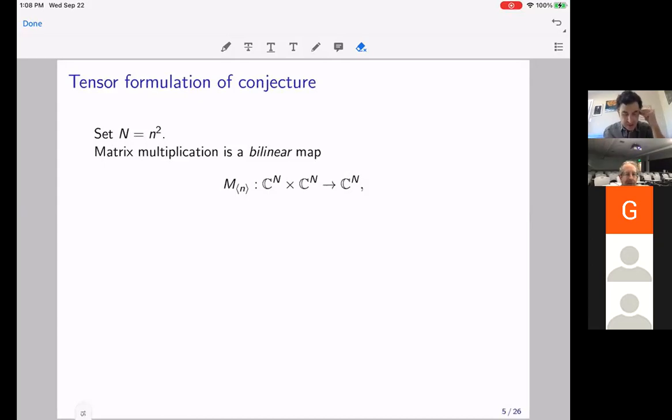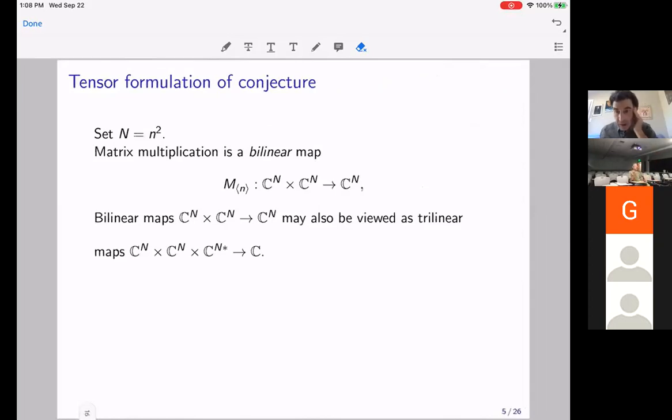So we think of matrix multiplication as a bilinear map. It eats one matrix, it eats a second matrix, and it spits out their matrix product. And if you fix one of the matrices, it's linear in eating the other matrix. So, bilinear maps, just like if you have a linear map, you could also view it as a bilinear form. A bilinear map can be viewed as a trilinear map, eating three matrices and spitting out a number.